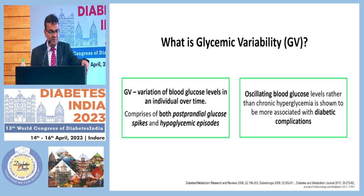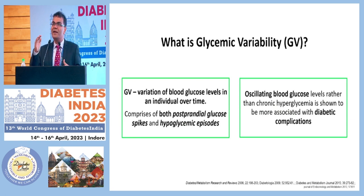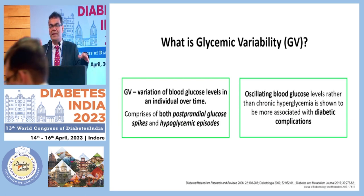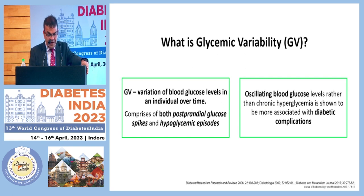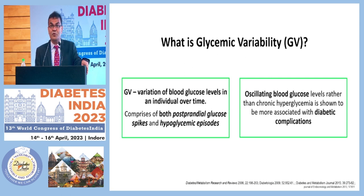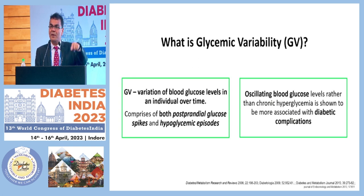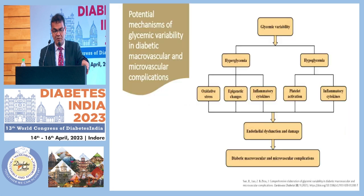What is glycemic variability? It is the variation of blood glucose level in individuals over time. It is an oscillating blood glucose level rather than chronic hyperglycemia, and that's been shown to be more associated with diabetic complications. There are data showing that a person who keeps their sugar level slightly higher has fewer complications compared to a person who has oscillating blood glucose levels.